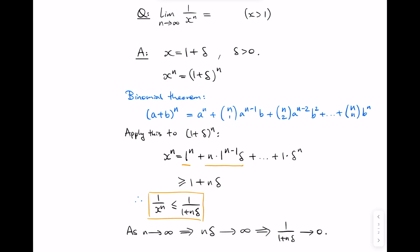This means that 1 over x to the n also goes to 0. So the answer to our original question is 0.